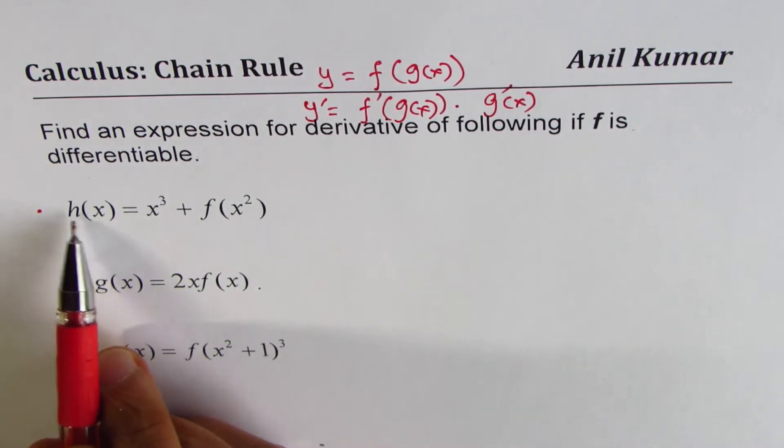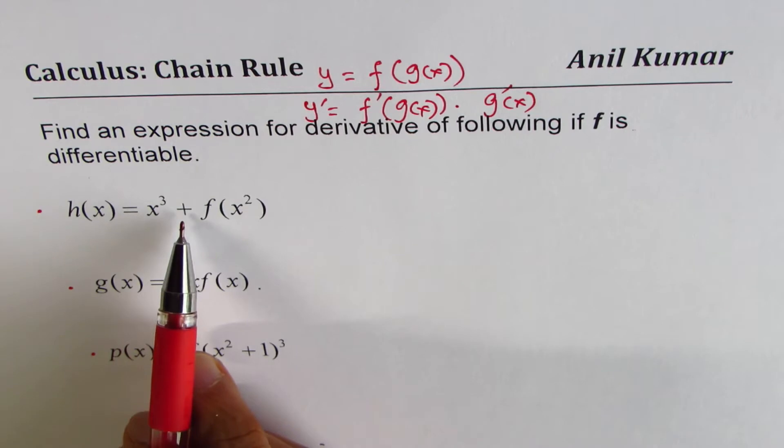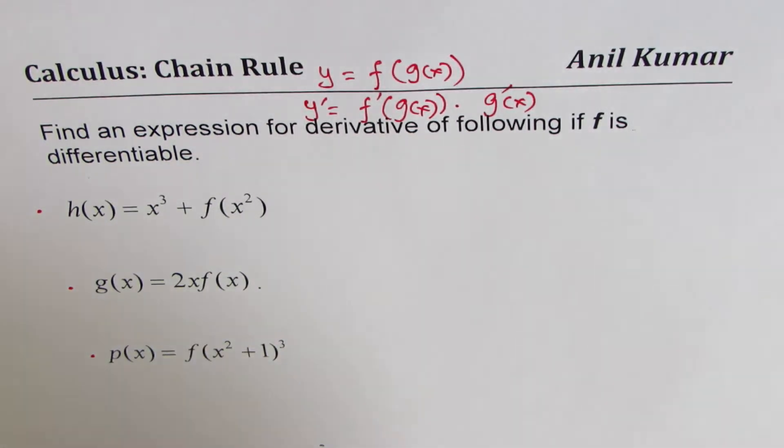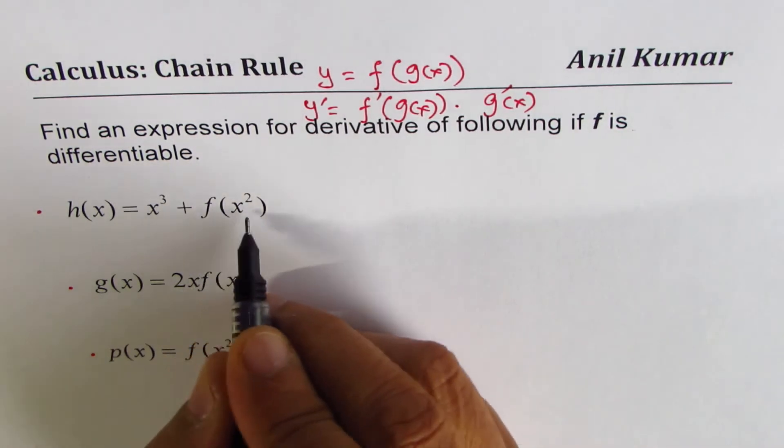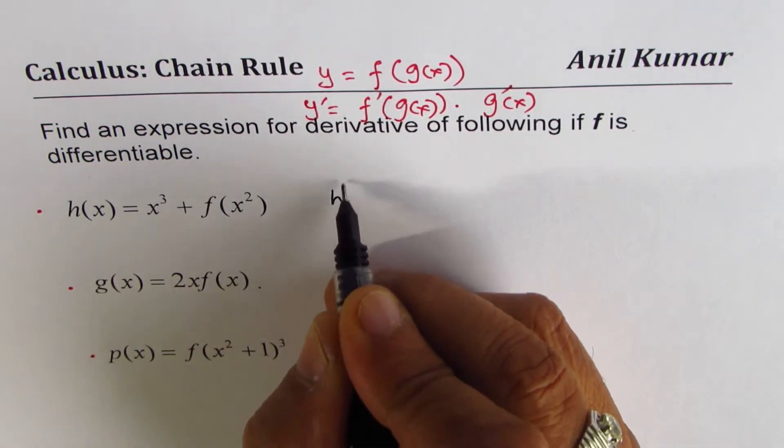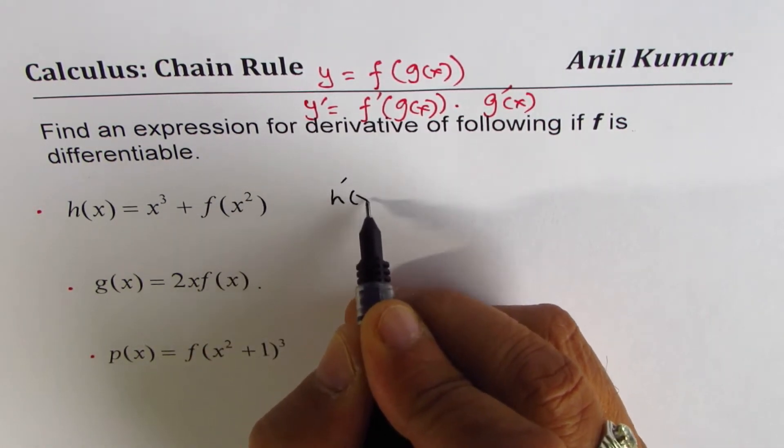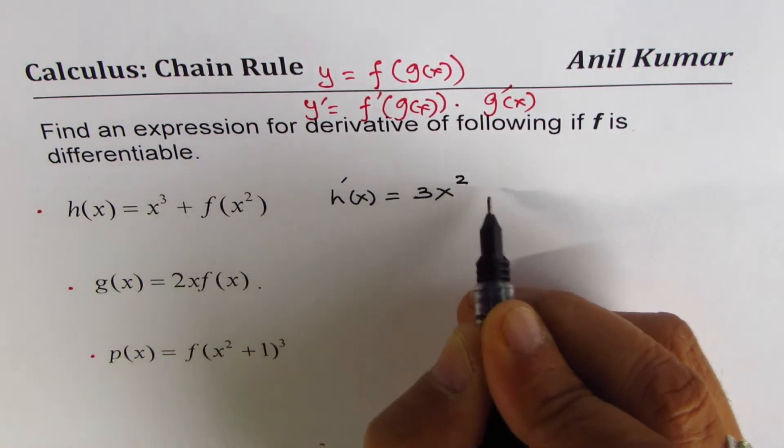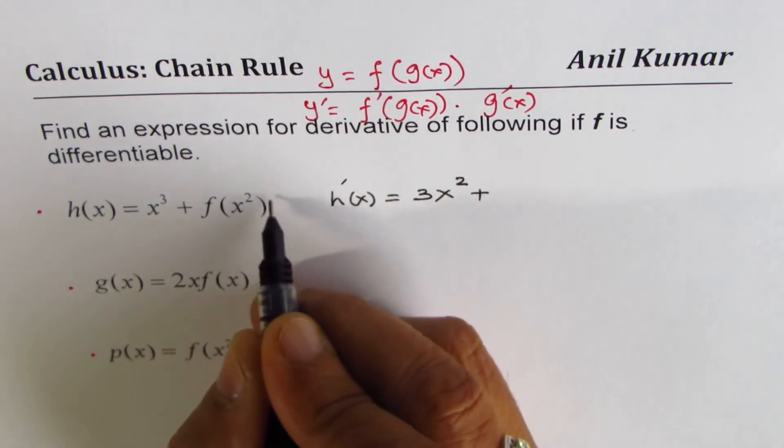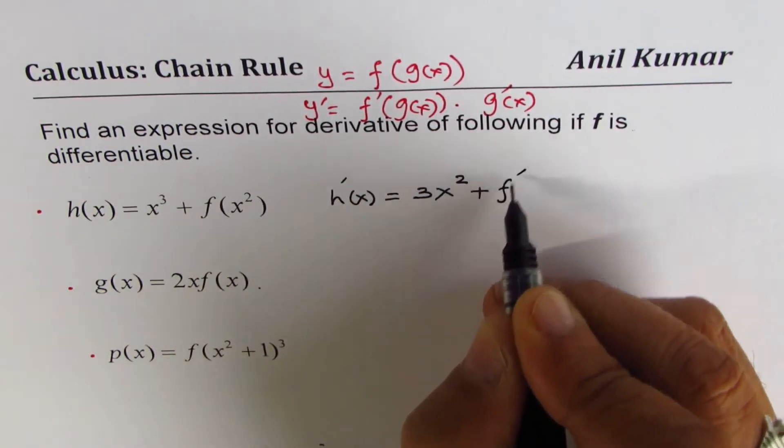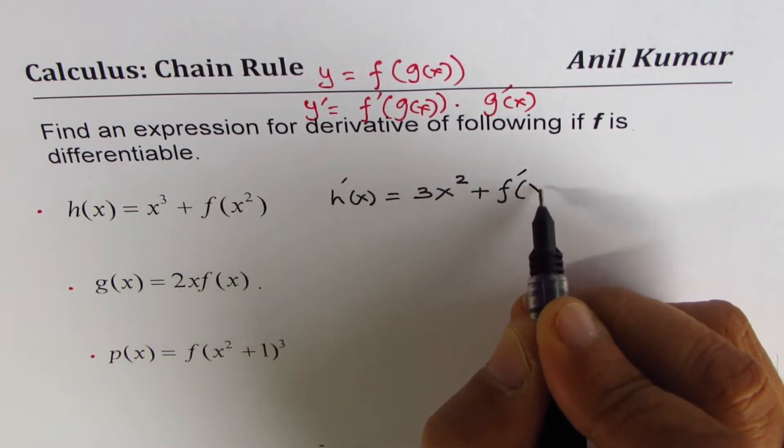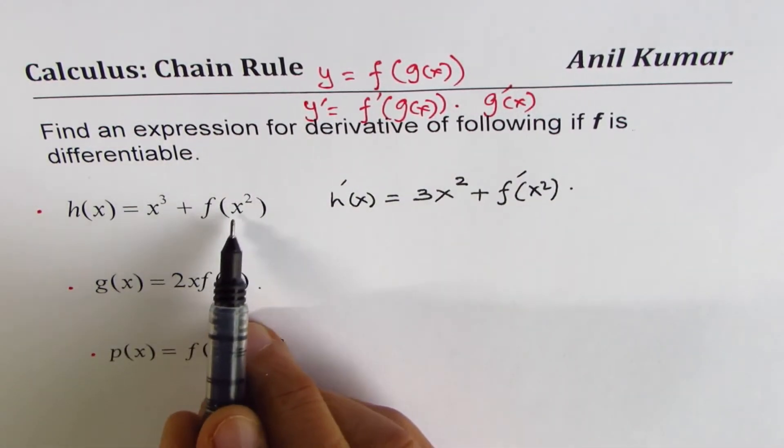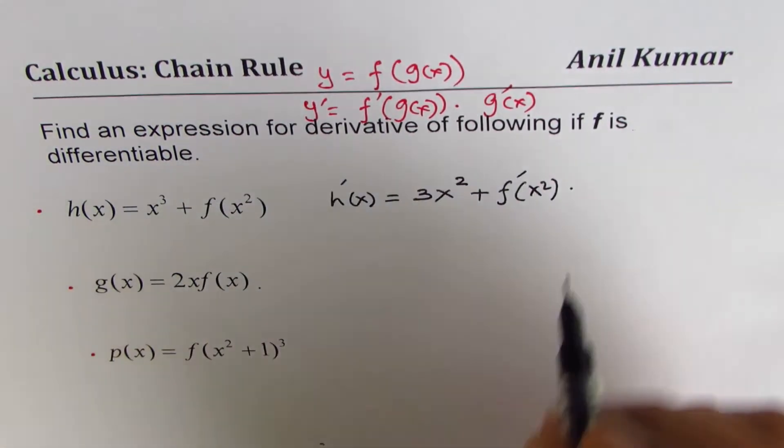First one is h of x equals x cubed plus f of x squared. So what is the derivative of this function with respect to x? We can say h prime of x equals the derivative of x cubed, which is 3x squared, plus the derivative of the outside function,